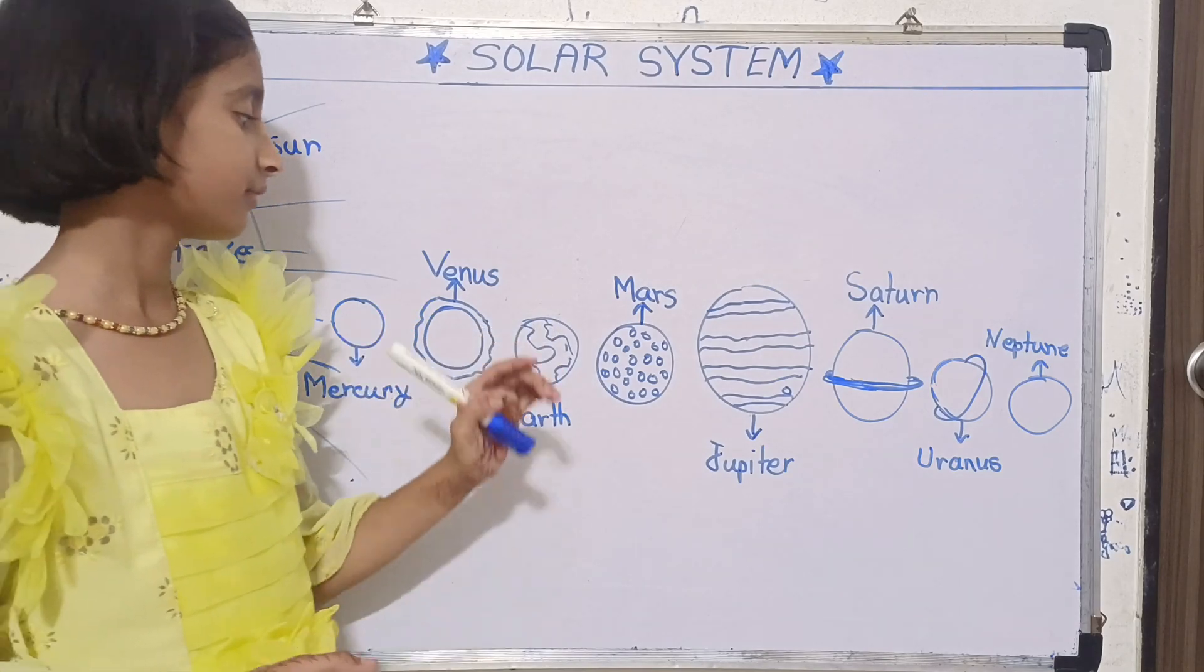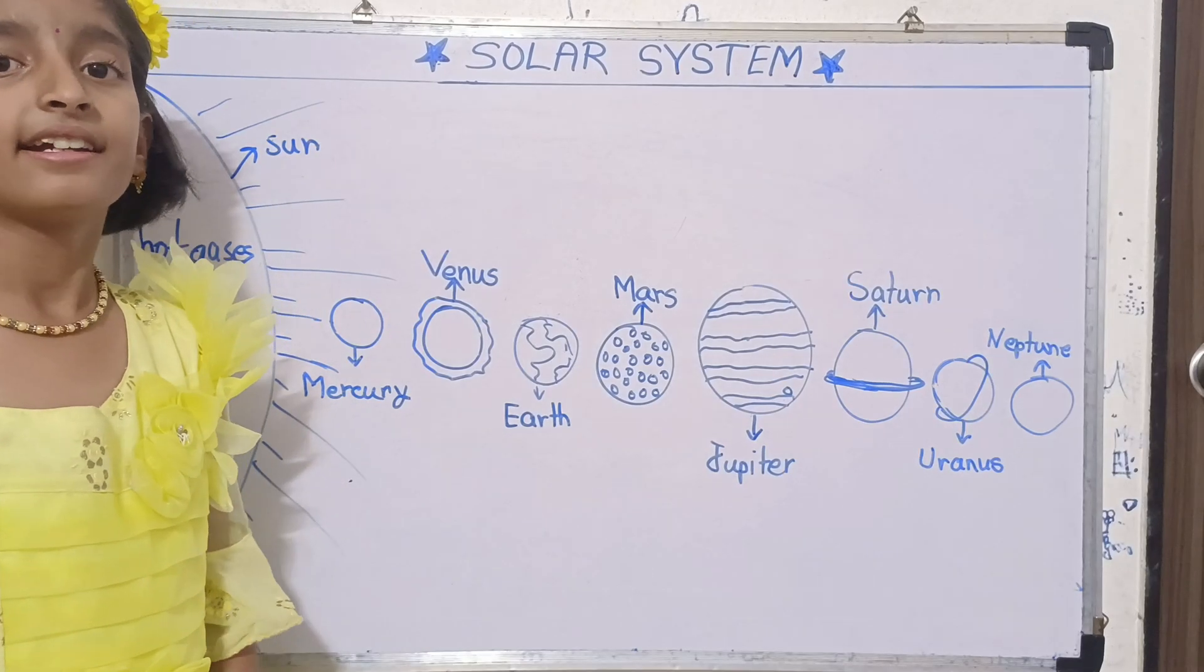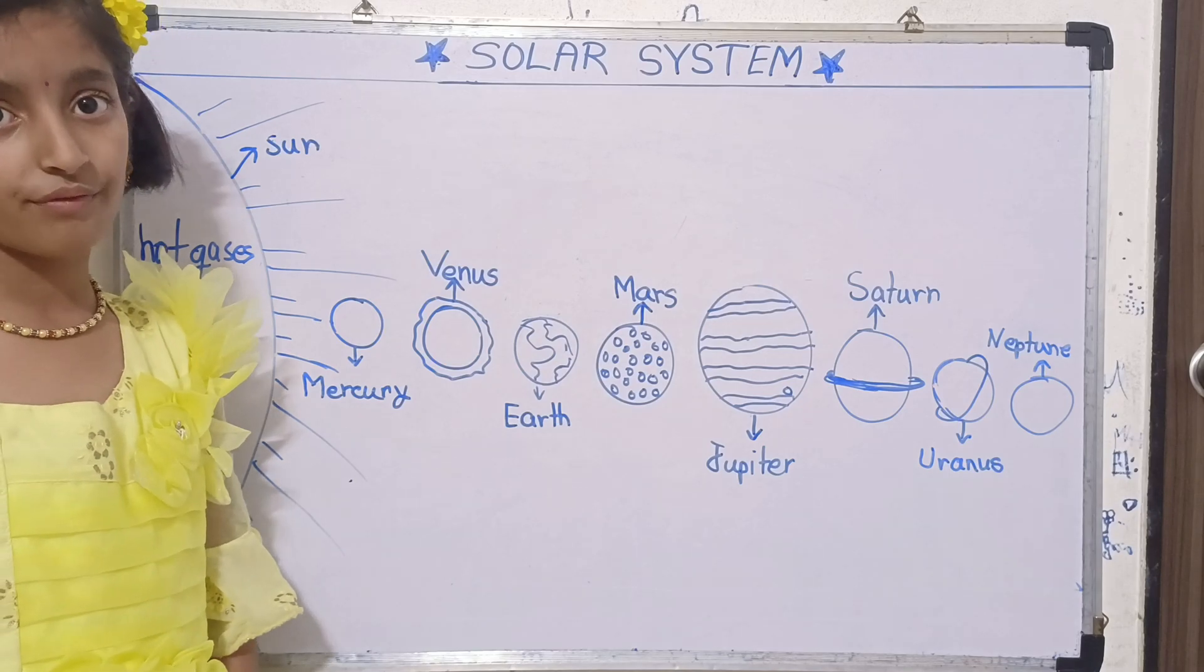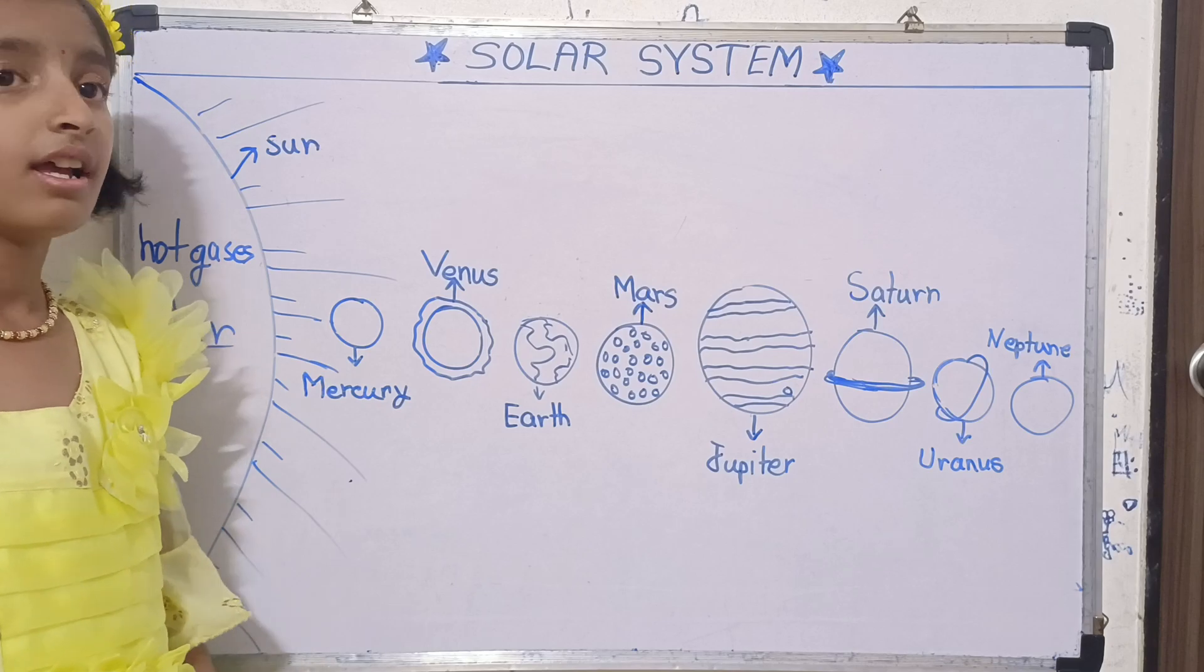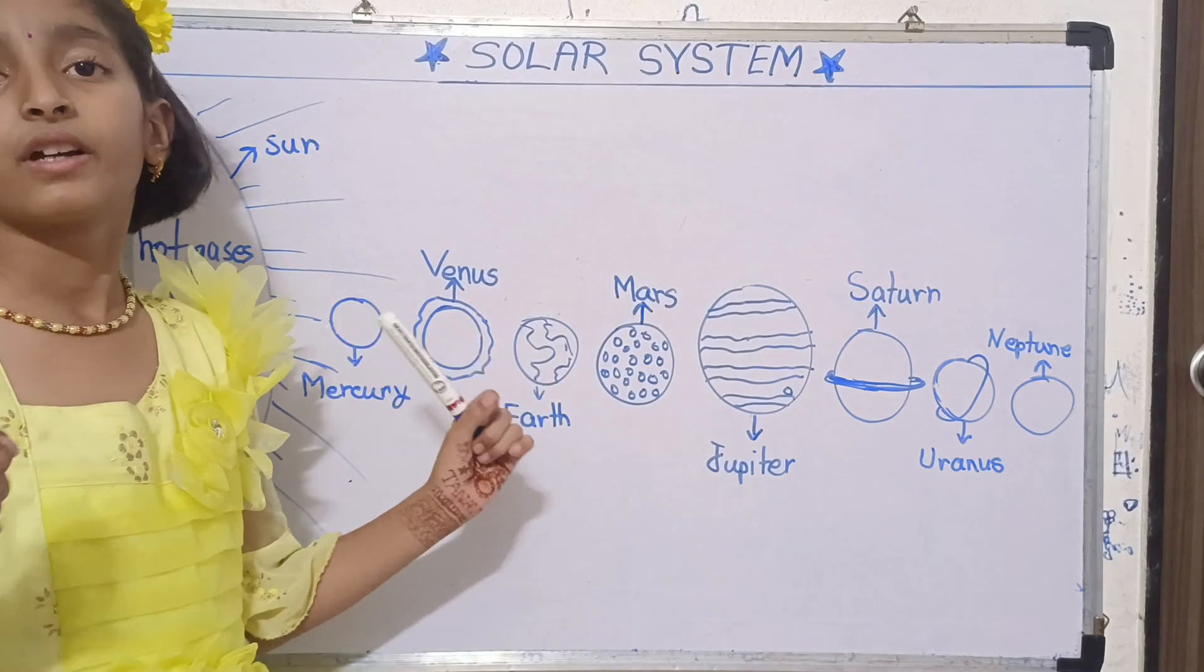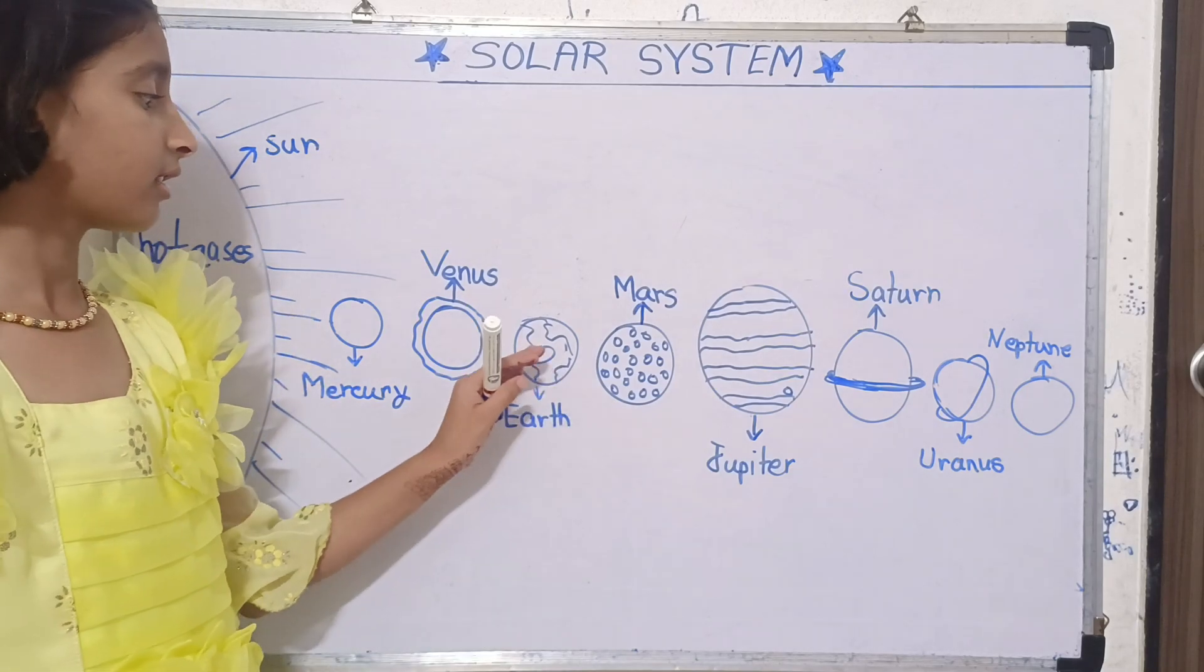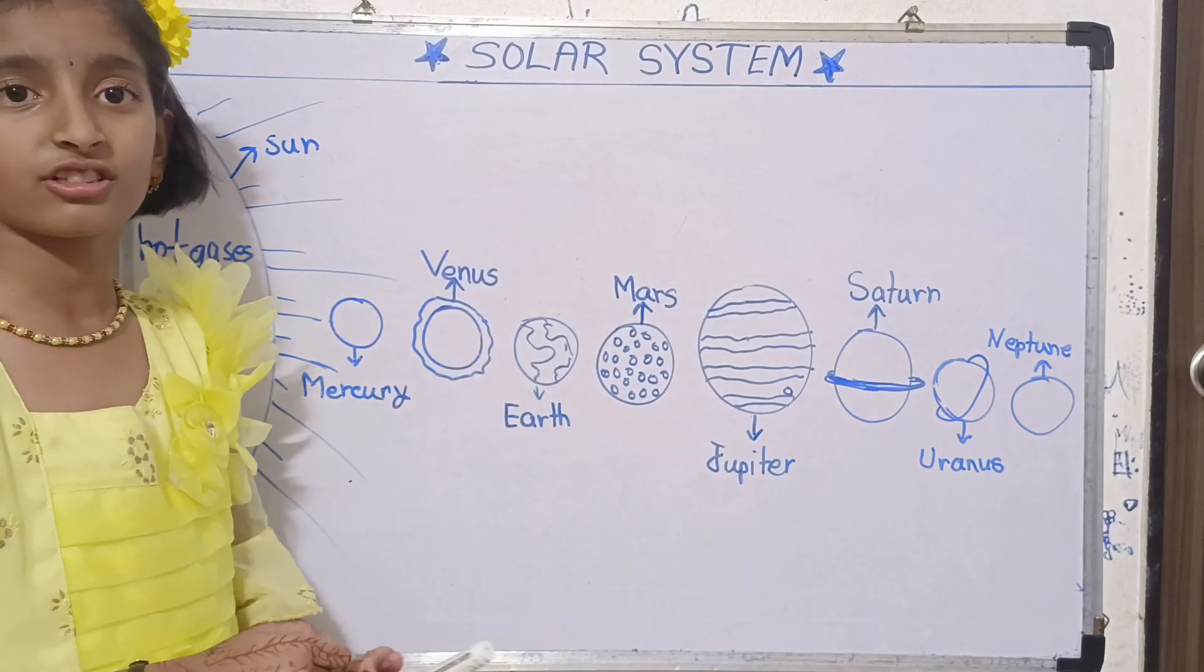Now Earth. Earth is our planet where we live on, and it gives us nature, plants, trees, fruits, water, air, and land. Earth is the only planet where human beings live, animals live, birds live, everything. Life is on Earth only, not other planets or other stars.